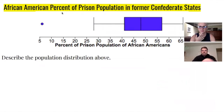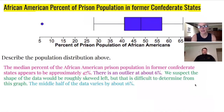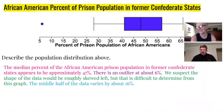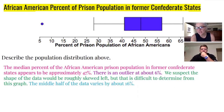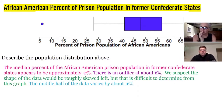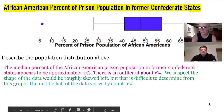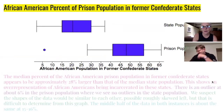The median percent of the African American prison population in former Confederate states is about 47 or 48 — as long as you put 'about' or 'approximately' in front of that number, that's fine. There's an outlier at six percent. We suspect the shape of the graph is roughly skewed left — the left whisker is a little bit longer — but it is difficult to determine from this graph. It almost looks symmetric, except for that outlier pulling everything over. The middle half of the data varies by about 16 percent.